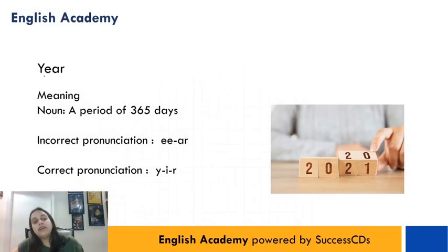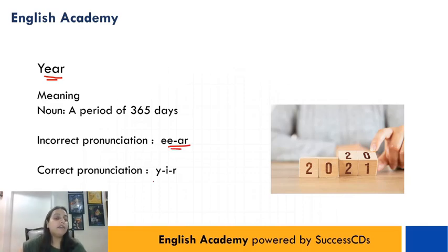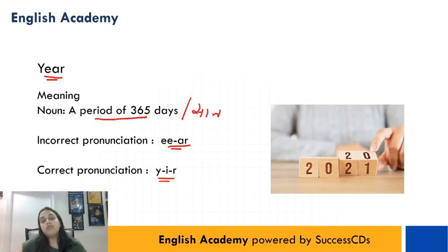The next word is Y-E-A-R. Log usually isse pronounce karte hain 'ear', but iski correct pronunciation is 'year'. Aur iska matlab hota hai a period of 365 days. Toh aapke jo saal hote hain, woh 'ear' nahi hota, woh hota hai 'year'.